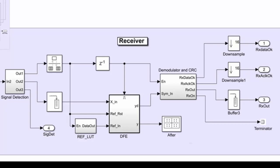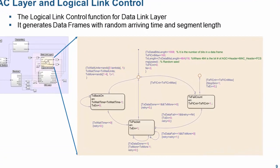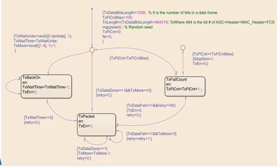The details of the receiver can be found in the model file provided at the end of this presentation. After introducing the physical layer, we now look at the data link layer. The first block of the data link layer is the logical link control function. This function randomly generates the arriving times of data frames and the number of segments of each frame. It also controls the retransmission of a segment that failed in delivery.